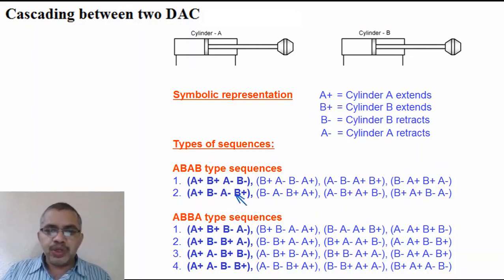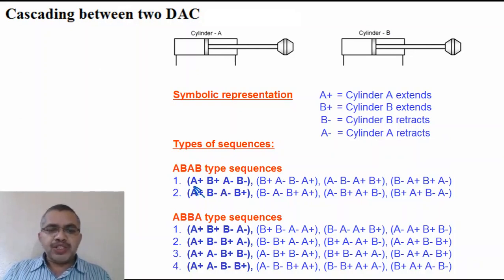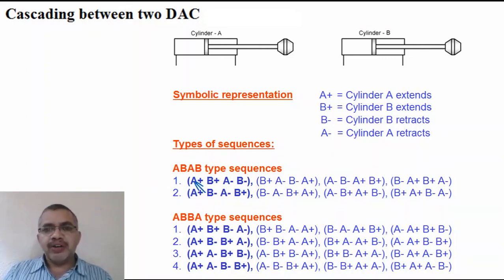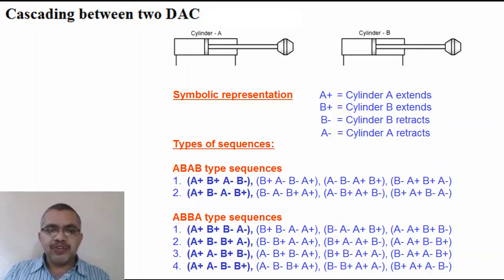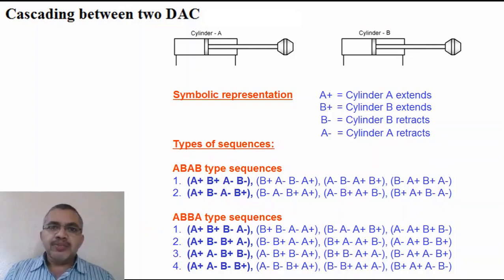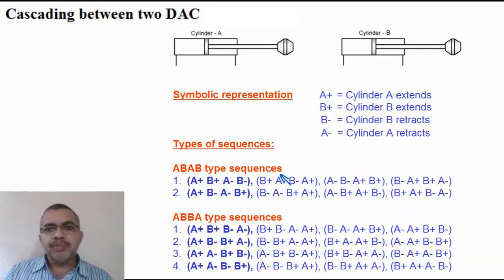There are basically two types of sequences: A-B-A-B type and A-B-B-A type. In A-B-A-B type, the first cylinder extends, second extends, first retracts, then second retracts. In A-B-B-A type, first cylinder performs its stroke, then second cylinder performs its stroke, then second cylinder comes back first, and then the first cylinder comes back. Whatever the sequence, we follow one method. The first step is to get ready with the sketch.